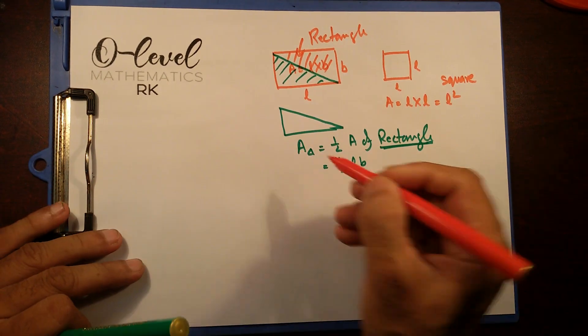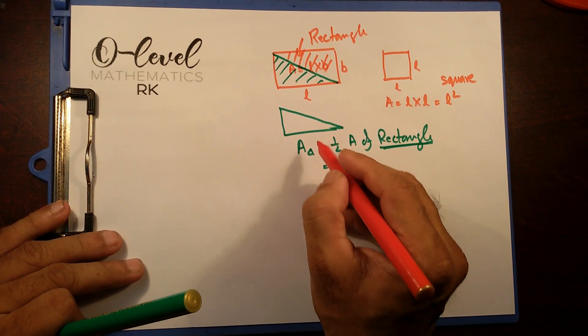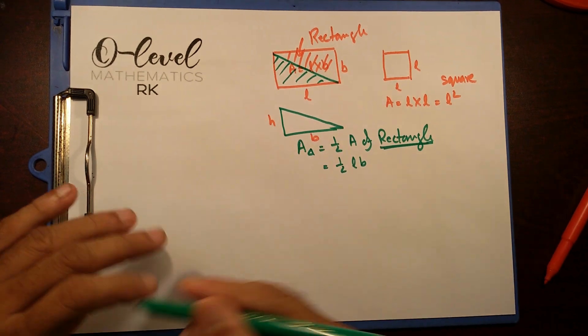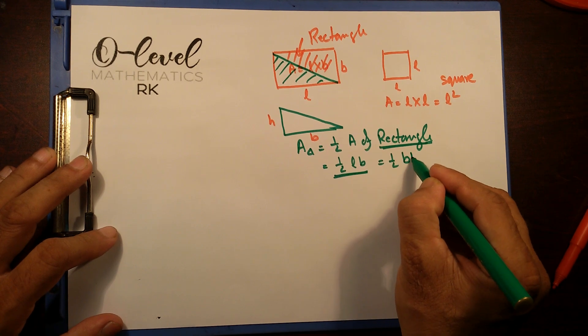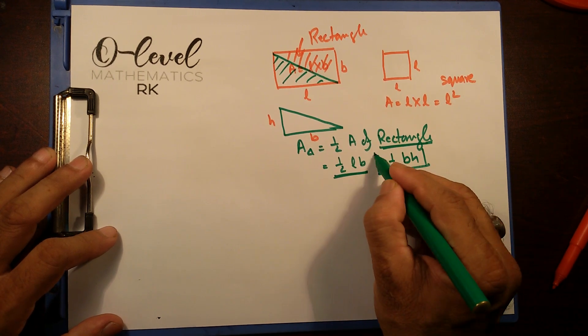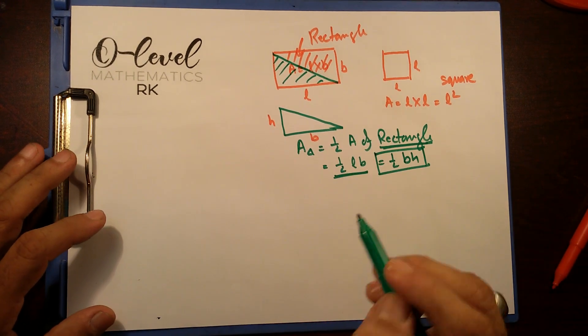And sometimes we, instead of putting a length and breadth, we put here base and this is height. And we rewrite this formula as half base into height. That's our general formula for the triangle.